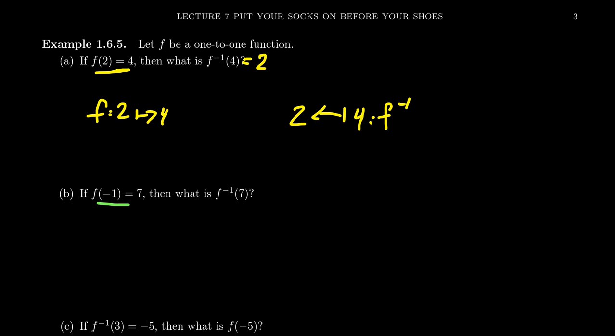And conversely, if f of negative 1 is 7, that means f inverse of 7 will equal negative 1. It reverses the direction. The x is the number we put in. The y is the number we get out. f inverse will just switch the roles of x and y. The point (negative 1, 7) is on f. Conversely, (7, negative 1) is a point on f inverse. It'll switch the two numbers around.